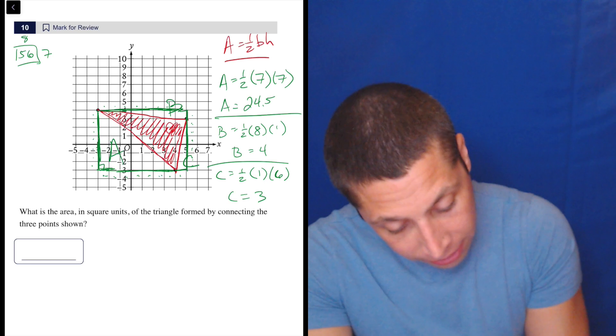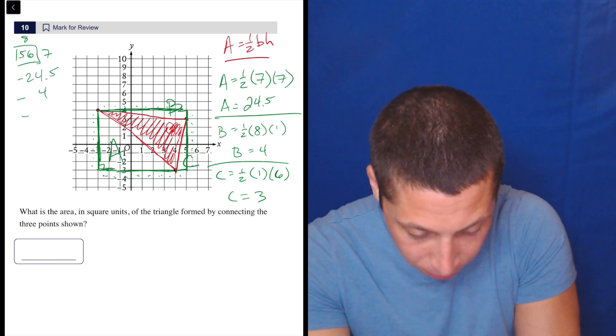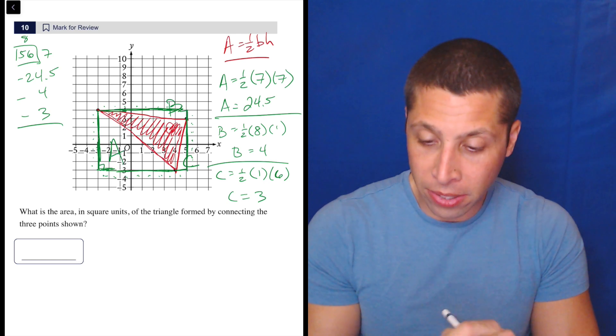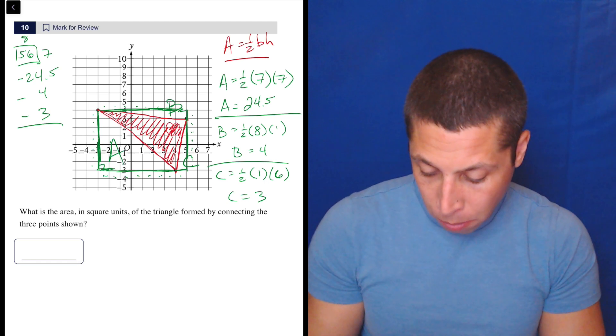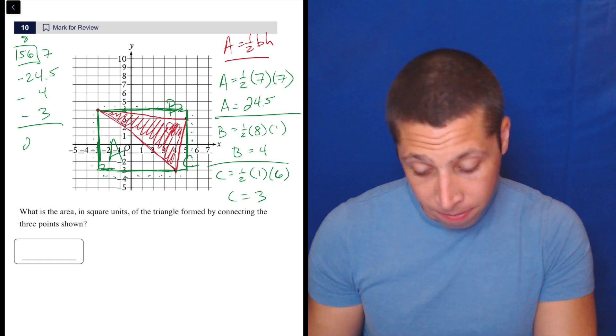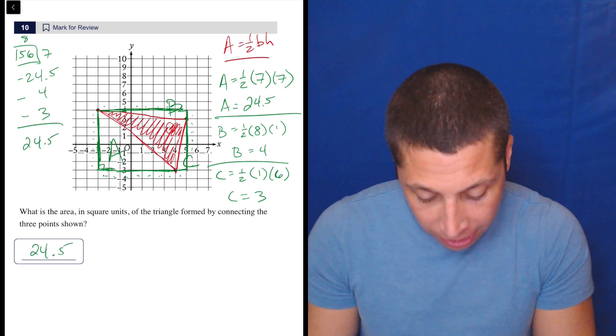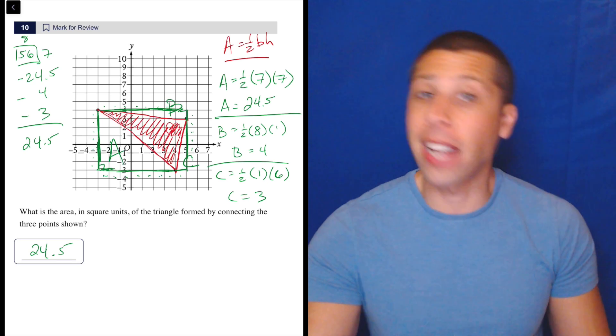So let's take our rectangle, subtract out 24.5, subtract out four, subtract out three. So we get 56 minus 24.5 minus four minus three is 24.5. So kind of works out nice that it's the same number. That's a little scary, but that is the answer. Done.